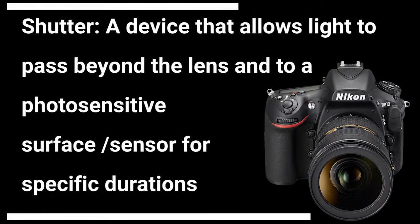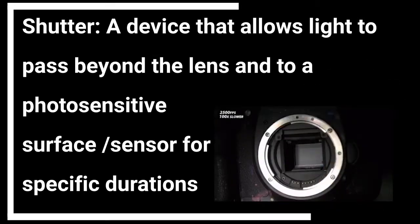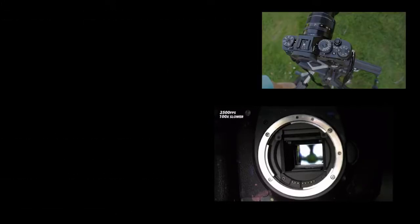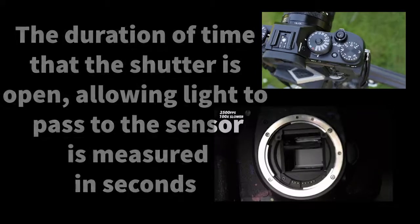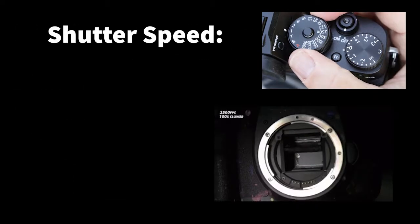The shutter is a metal device built into the camera body that allows light to pass beyond the lens and to a photosensitive surface — the sensor — for specific durations. It's really about time. On the right-hand side of the screen you can see a slow-motion animation of a shutter opening and closing. You're also seeing the mirror inside the camera body kick up while the shutter opens, and then the shutter closes and the mirror kicks back down. The duration of time that the shutter is open is measured in seconds, and these measurements are referred to as shutter speeds.